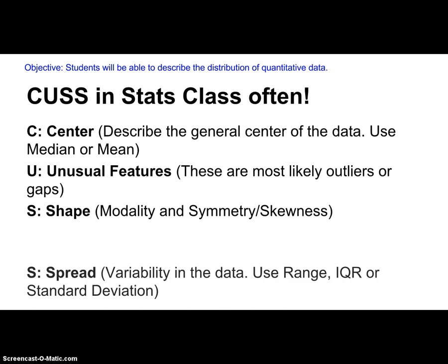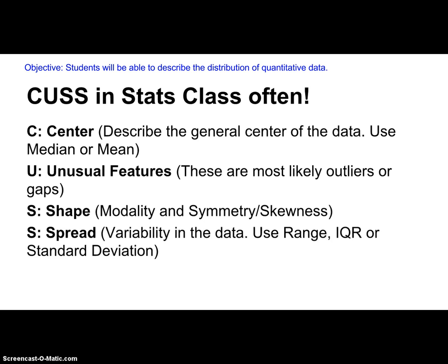Lastly, you want to talk about the spread — the variability in the data. You're either going to use the range or the IQR if the data are skewed, or you're going to use the standard deviation if the data are symmetric.